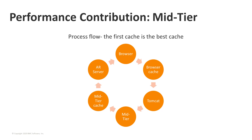The first stop any browser request would make is in the browser cache, where it checks if what you're asking for is already available. Next, it would move on to Tomcat to get to Mid-Tier, and then Mid-Tier would check in its own cache. If it's not available there, it would go out to AR Server to get the item. The first cache is the best cache — when possible, we don't want the request to have to go anywhere but the browser cache.